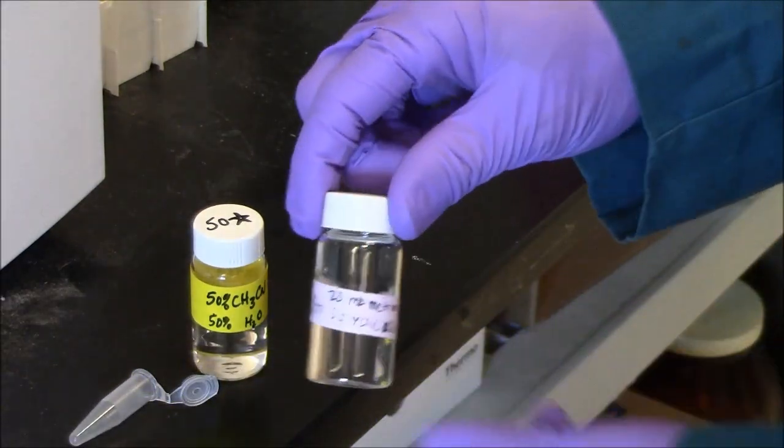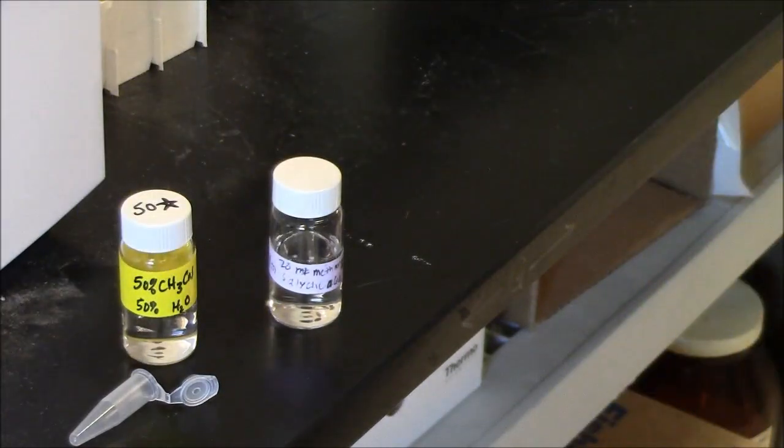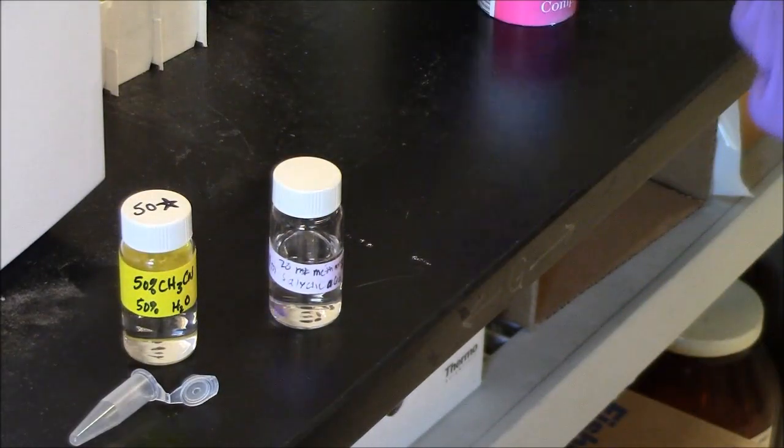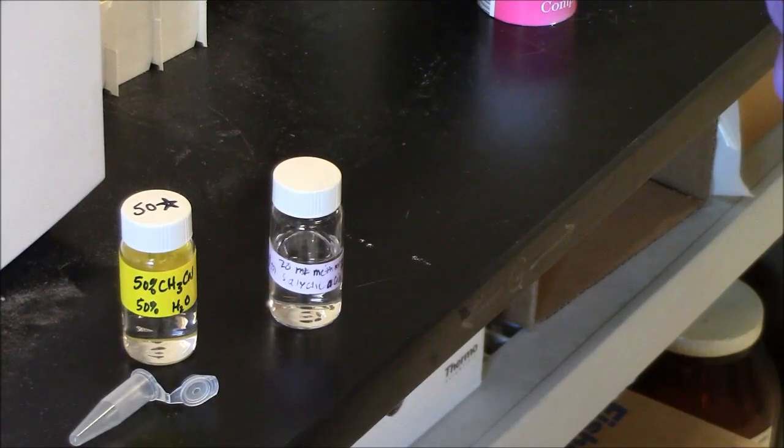I have here a stock solution of 0.1 molar salicylic acid. To make the dilution, I'll do a 50-fold dilution, which will make the concentration in the Eppendorf tube 2 millimolar.